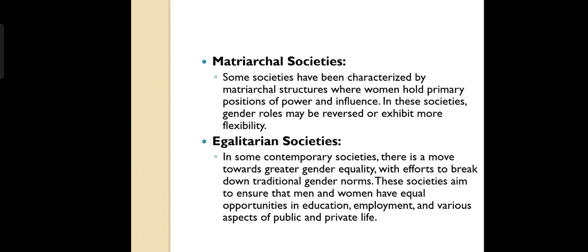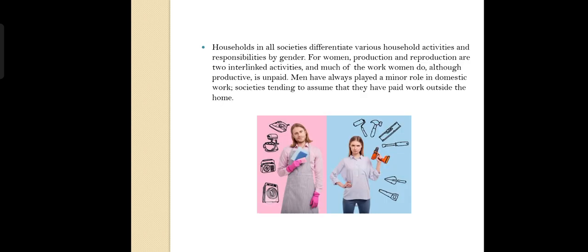Next, we come to egalitarian societies. In some contemporary societies, there is a move towards greater gender equality with efforts to break down traditional gender norms. These societies aim to ensure that men and women have equal opportunities in education, employment and various aspects of public and private life. There is a shift towards encouraging both men and women to express the full range of emotions and seek support when needed. Men are increasingly encouraged to express vulnerability and seek help for mental health issues. Households in some societies also differentiate various household activities by gender; for women, production and reproduction are two interlinked activities and much of the work women do, although productive, is unpaid. Men have always played a minor role in domestic work, with society tending to assume that they have paid work outside the home.